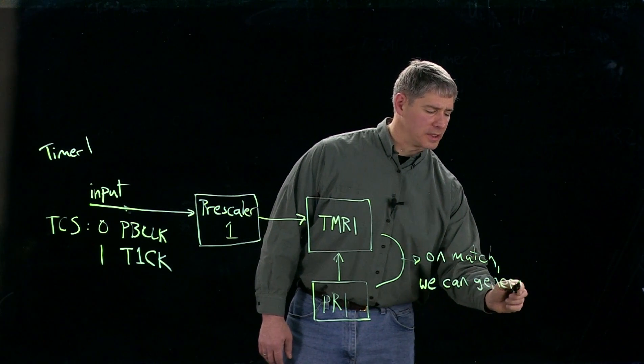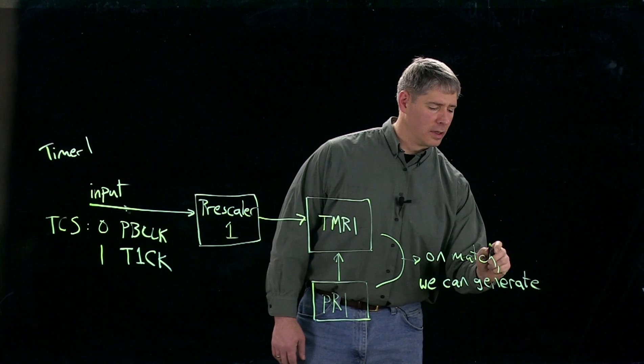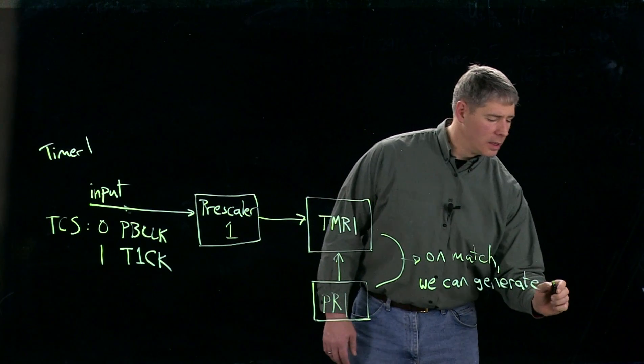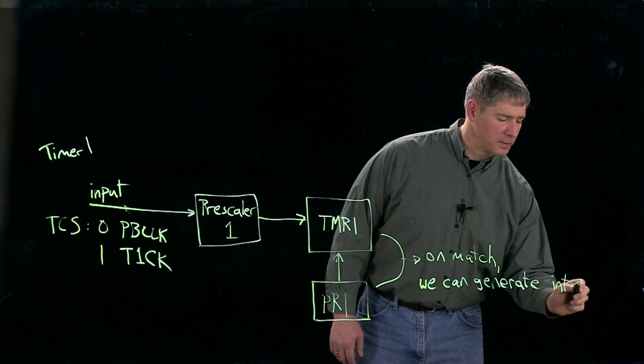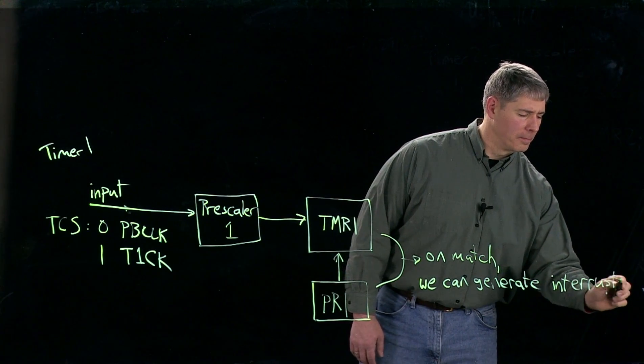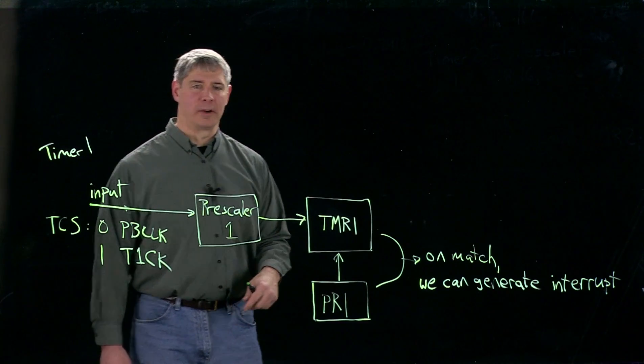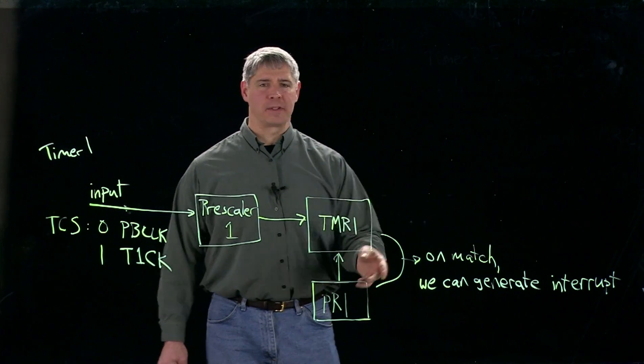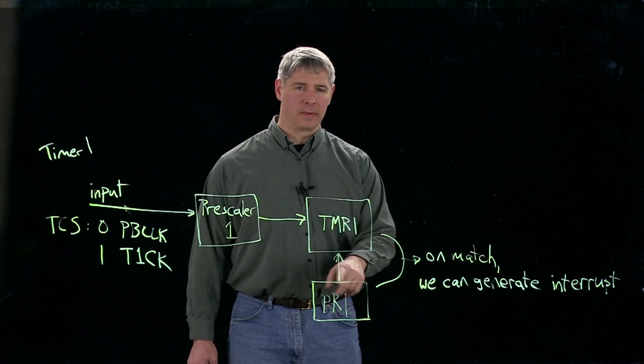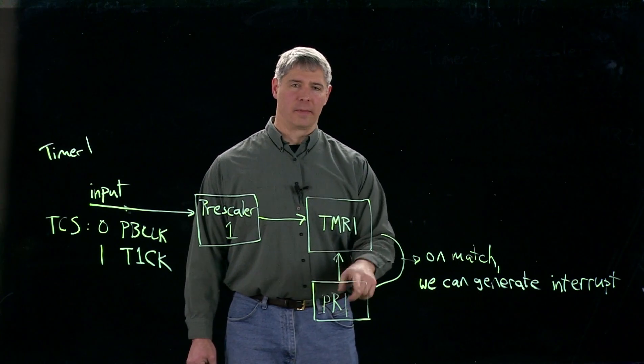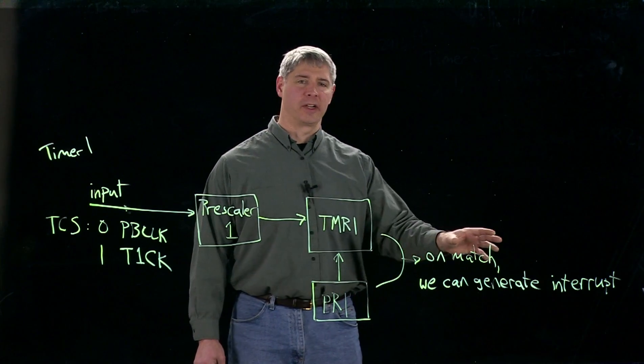And this is something we have to decide when we set up the interrupt bits for this particular timer. So we have the option now of every time the timer counts up to the value on the period register to generate an interrupt.